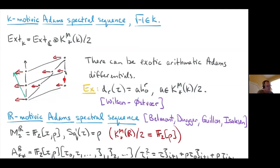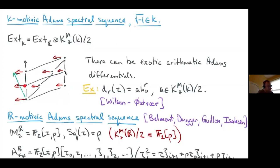I've drawn a schematic of the Adams E2 page. The black stuff — H-naught, H1, H2 in the first three stems — is the familiar C-motivic Ext. On each black dot there is a copy of Milnor K-theory, indicated by red arrows extending to the left into many degrees. They don't change the Adams filtration but do change the topological degree. There is room for exotic differentials: things not occurring C-motivically — what's new when we pass to a field with arithmetic.